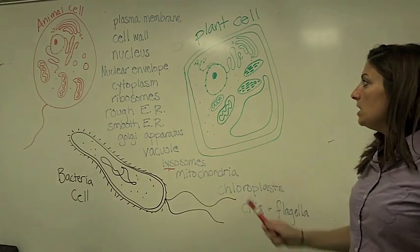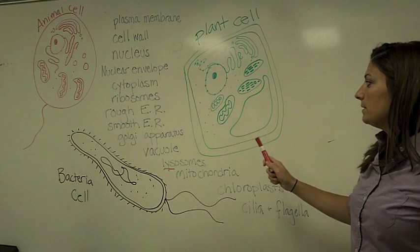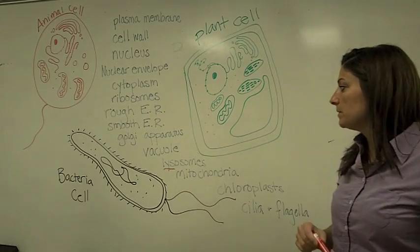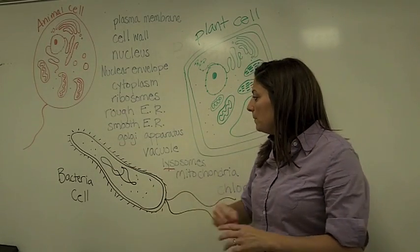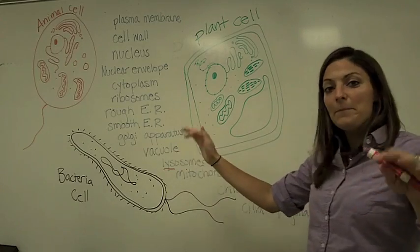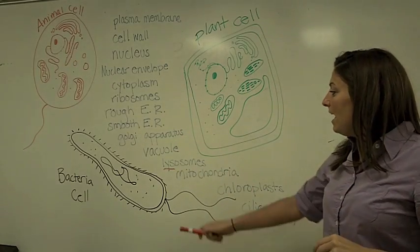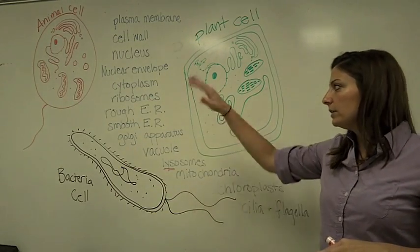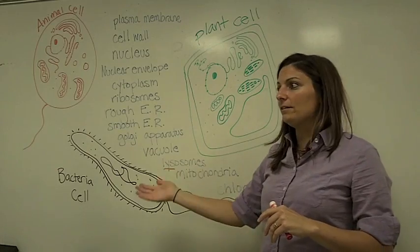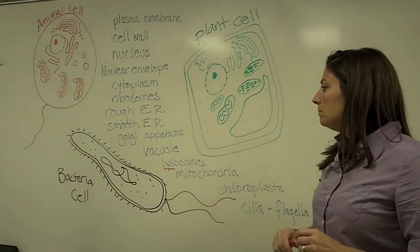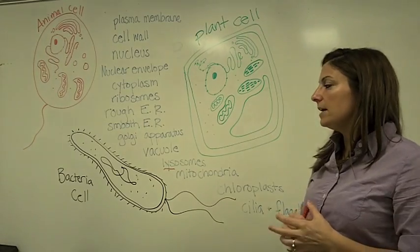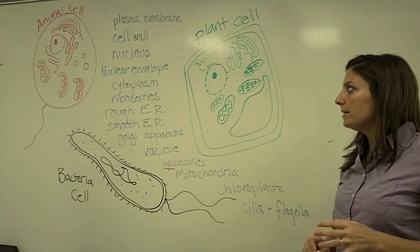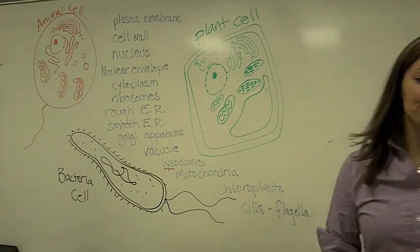Finally, cilia and flagella. You won't find these in plant cells. You will find them sometimes in bacterial cells and sometimes in animal cells. Cilia are the little hairs that can beat together in motion to move the cell. Flagella — you can have one or multiples — are longer and act like a whip or almost like a rudder on a boat, propelling the cell and helping it steer around. So those are the main cell parts we're going to focus on. We'll talk more about them tomorrow. Have a great night. Bye.